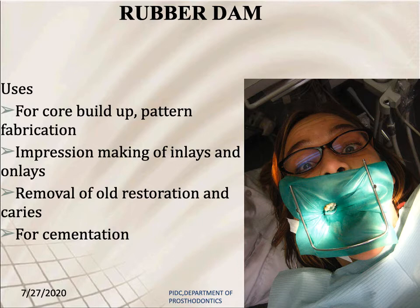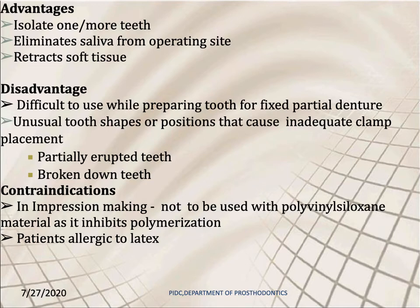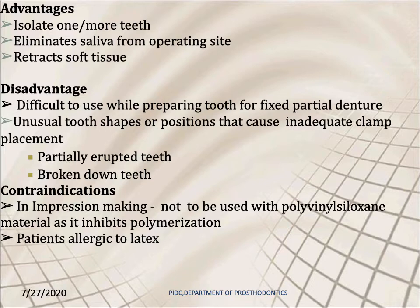The rubber dam is used for core build-up and pattern fabrication, impression making of inlays and onlays, removal of old restorations and caries, and for cementation purposes. Advantages include isolating one or more teeth, eliminating saliva from the operating site, and retracting soft tissue. Disadvantages include difficulty in use during fixed partial denture preparation and unusual tooth shapes causing inadequate clamp placement. Contraindications include impression making, as it inhibits polymerization of polyvinyl siloxane or addition silicone impression material, and use in patients allergic to latex.